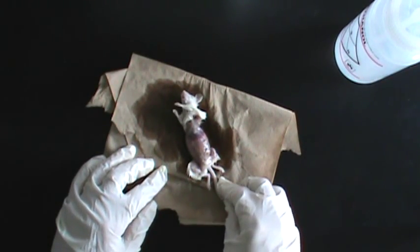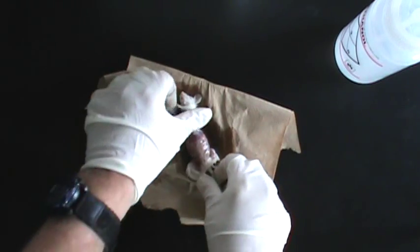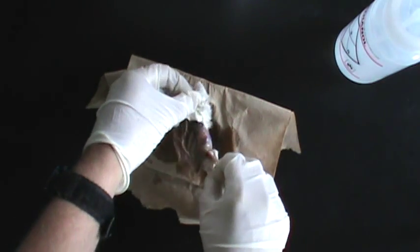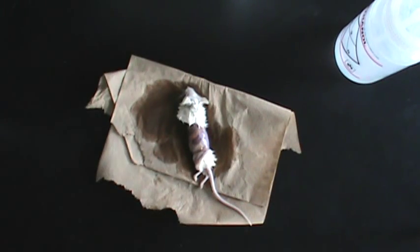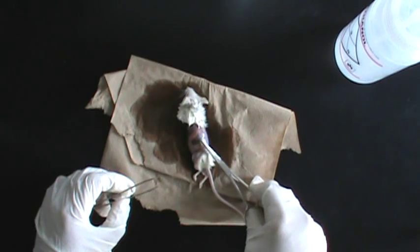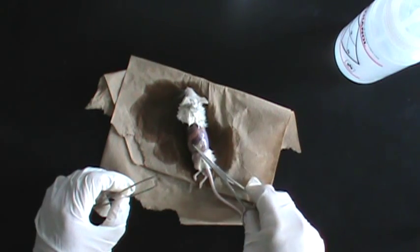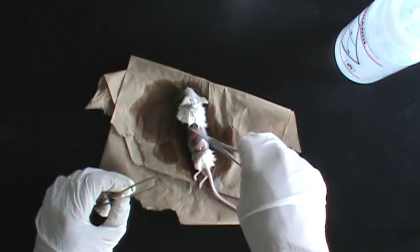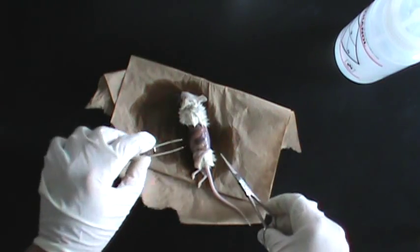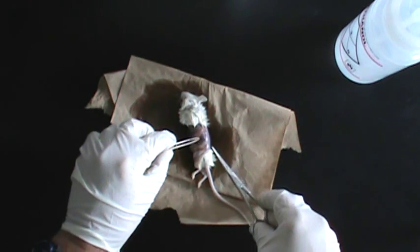The spleen will be found on the right side of the mouse. Now this is the mouse's right side. So if you lay the mouse on its left side with its right side towards you, you will see a small reddish bean shaped organ, which is the spleen. We do not want to use the larger reddish organ, which is the liver.